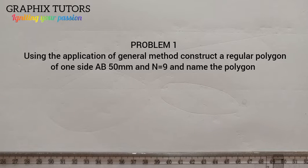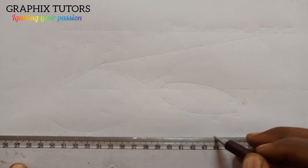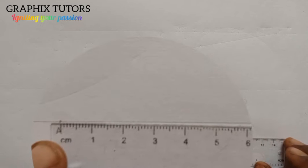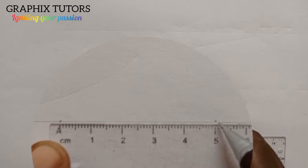The first thing you do is take your metal rule and T-square, place it, and draw your horizontal line. On that horizontal line, mark a point A. Then measure 50 millimeters — that is one side — so from zero to 50 millimeters, mark point B.